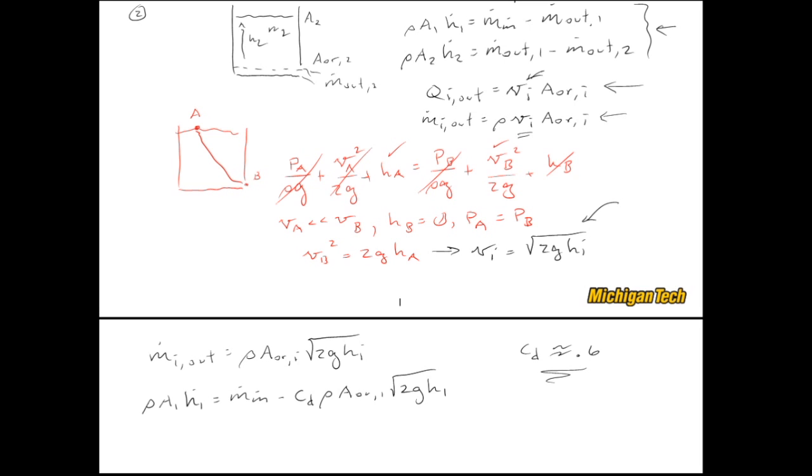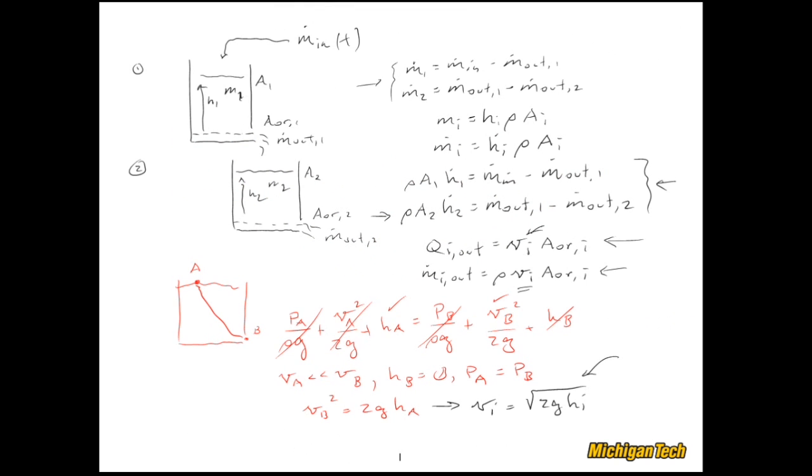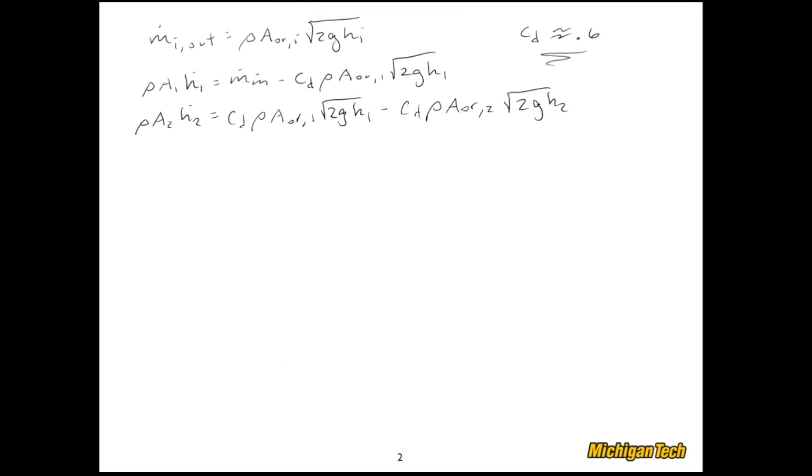But we won't get into the numbers at this point, but you can just use this as a bit of a reference. So, let's keep going with these substitutions. I am now on this equation. So, Rho A2 H2 dot is equal to C D Rho A orifice 1 square root of 2G H1 minus C D Rho A orifice 2 square root of 2G H2. And I believe I am done.